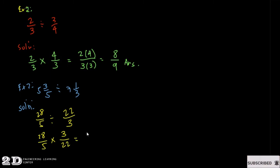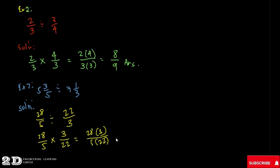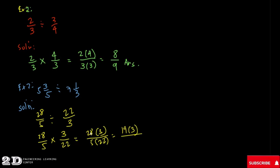Now change the division sign to multiplication and invert the second fraction: 28 over 5 times 3 over 22. Before multiplying, we can simplify — 28 and 22 share a common factor of 2. Dividing both by 2 gives 14 and 11 respectively.